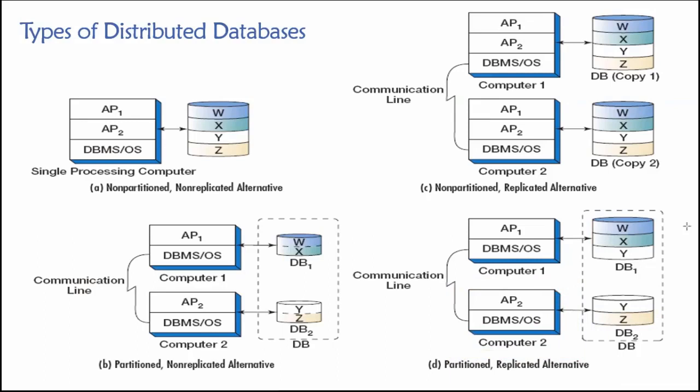So this design here combines both partitioning and replication and serves an organization that has those kinds of needs. So these are basically our four different designs for distributed database processing. You can go from essentially not having any distributed database processing to any combination of these other three: partitioned but non-replicated, replicated but non-partitioned, or a mix of partitioned and replicated.